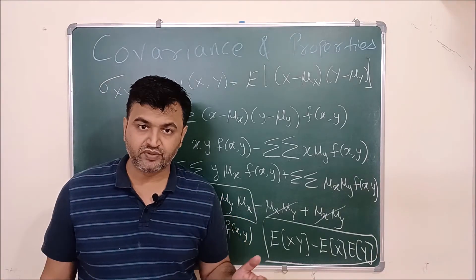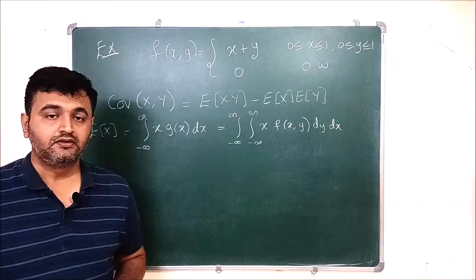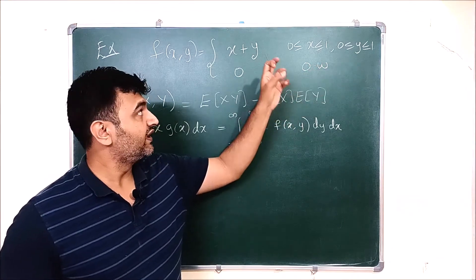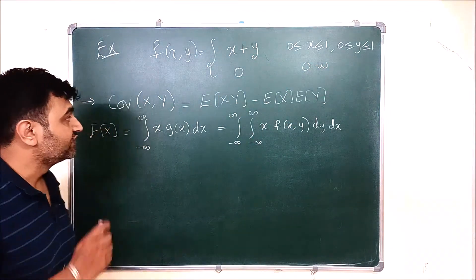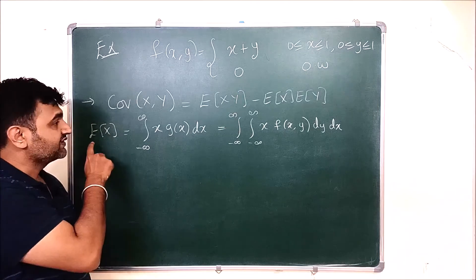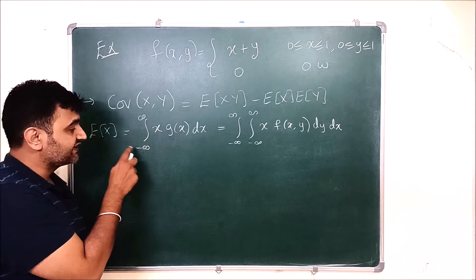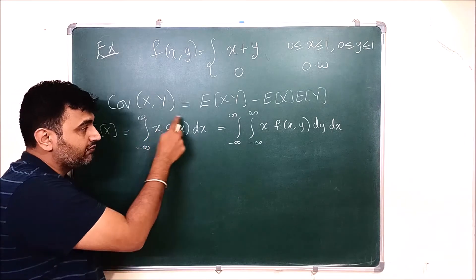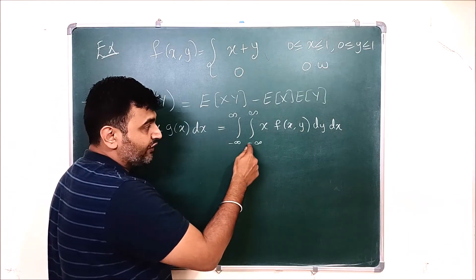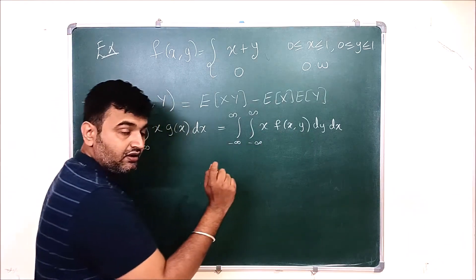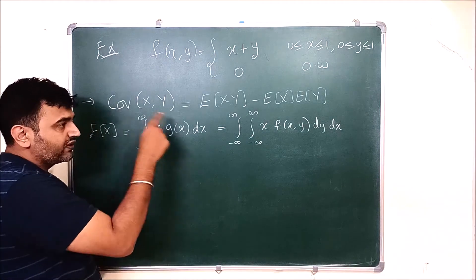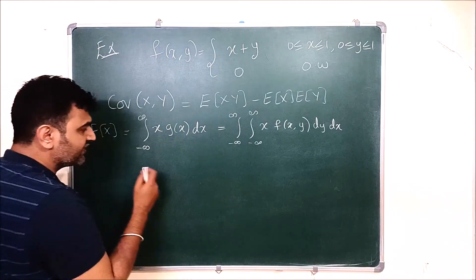Before exploring more properties, let us take one example. A joint PDF is given where x is from 0 to 1 and y is from 0 to 1 — so you have a square region. The function is f(x,y) = x + y, otherwise zero. The question is: what is Cov(X,Y)? We will use the result we just proved. First, find E[X] by integrating x times the marginal distribution of x: integrate f(x,y) over y first, then over x.